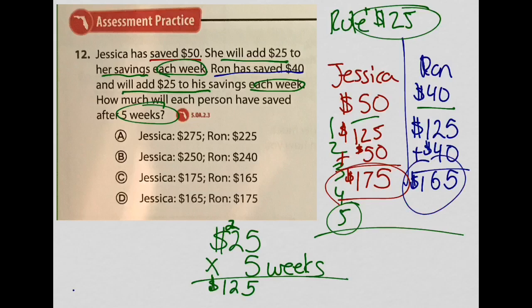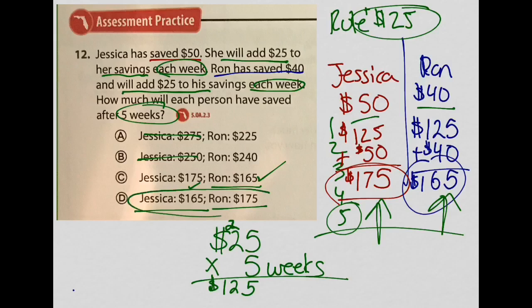Let's check our answers. Jessica has $175 — that's correct. Ron has $165 — that's correct. Be careful: answer choice D is a distractor because it switches the person's name with the amounts. It's very important to keep your people or items organized so you know Jessica's amount and Ron's amount. The correct answer is C.